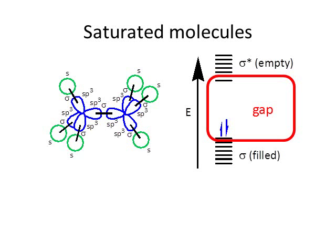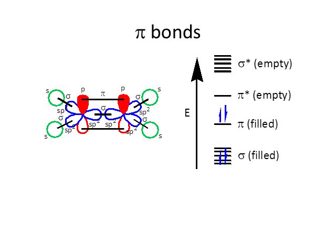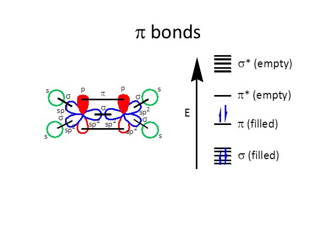For a saturated hydrocarbon like ethane, this gap is very large. But when we've got pi bonds, the gap is smaller. In ethene, the sigma bonding combinations are much more stable and sigma stars much less stable, but when two p orbitals form a pi bond, the interaction is not as strong — it's more of a sidelong interaction. So the pi orbital is our HOMO and the pi star is our LUMO, and the gap between these is much smaller than in ethane.